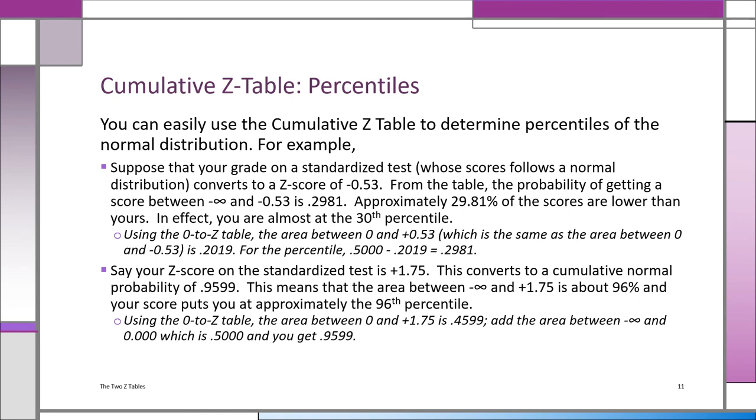Here's an example. Suppose that you take a standardized exam, and the scores of this exam follow a normal distribution. Whatever grade you got, when you convert it to a Z score to standardize it, you get a Z score of negative 0.53. From the table, trying to figure out the percentile that you're at, you see that the probability of getting a score between negative infinity and negative 0.53, the standardized value of your score, is 0.2981. That's the direct table value. So what I told you is approximately 29.81% of the scores are lower than yours, and you're at almost the 30th percentile.